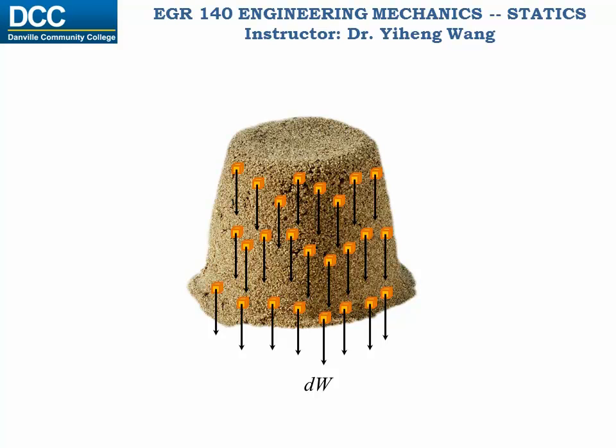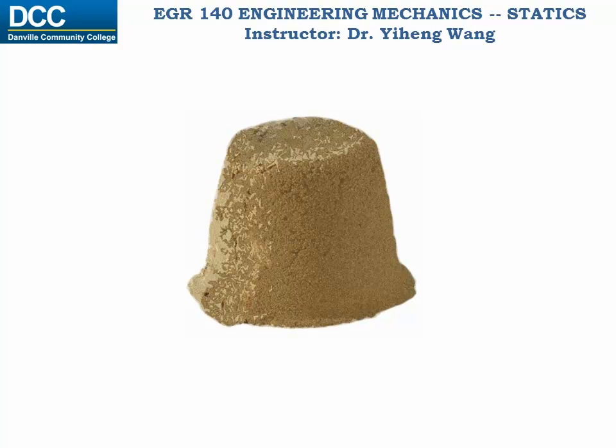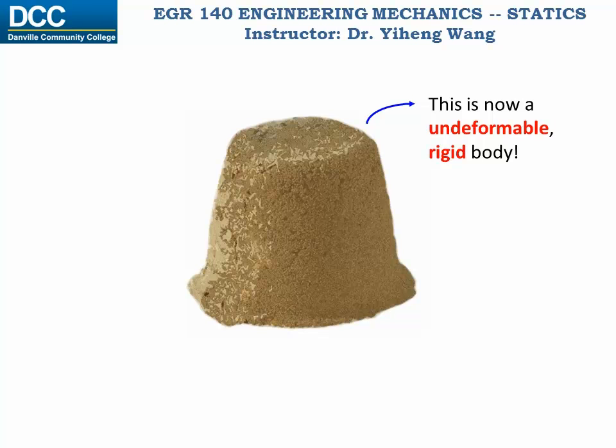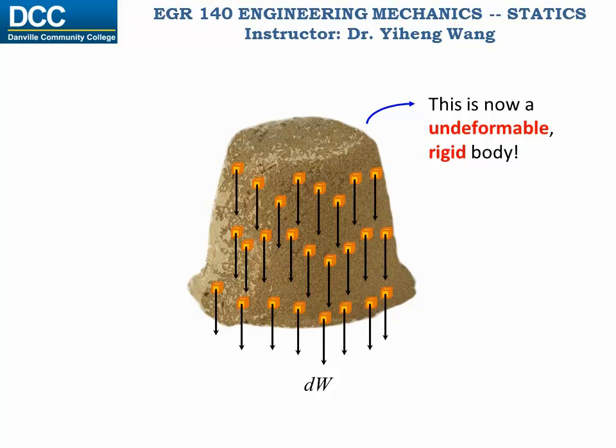In this class we deal with undeformed rigid bodies, and we know that in reality a pile of sand is definitely deformable. So let's imagine this pile of sand is tightly glued together. I formatted the picture to reflect that, and now it has become a solid undeformable rigid body. It is still made up of an infinite number of particles with differential weight dw, distributed through its volume.